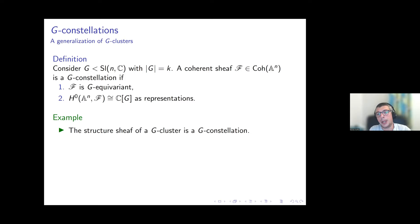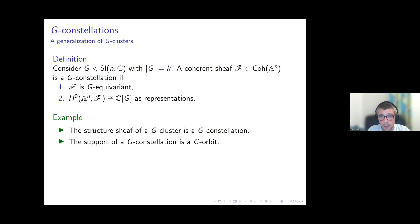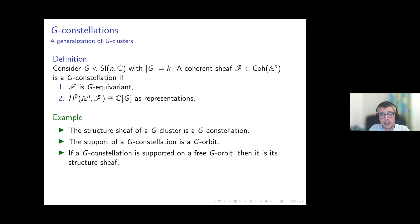Examples of G-constellations: of course the structure sheaf of a G-cluster is a G-constellation. We also notice that the set-theoretic support of a G-constellation — the points where the stalks are nonzero — is a G-orbit, following from the first condition. If a G-constellation is supported on a free orbit, then it is canonically isomorphic to the structure sheaf of that free orbit.